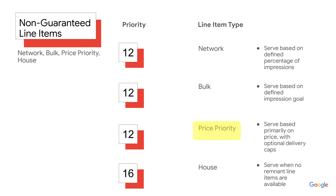Next, price priority line items serve primarily based on price. This line item can be used to fill your site's unsold inventory with the highest paying available line item.